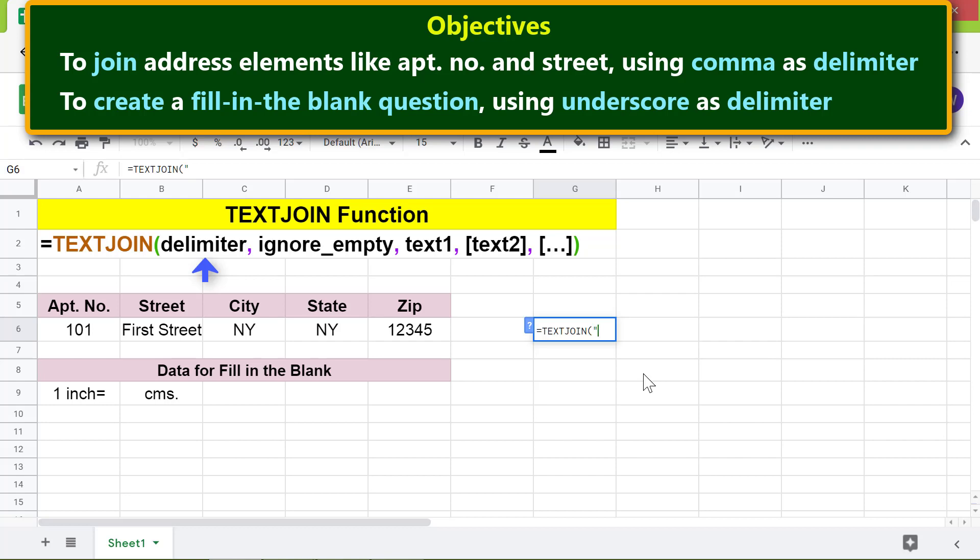For text one, select this range and press enter. TEXTJOIN has joined each value in the range separated by comma in this string.